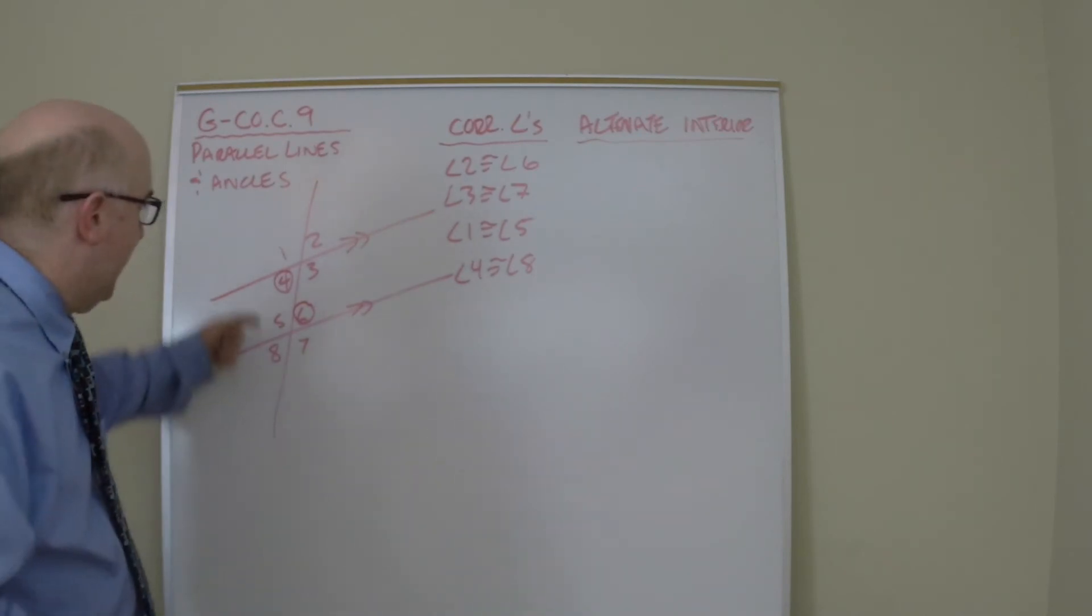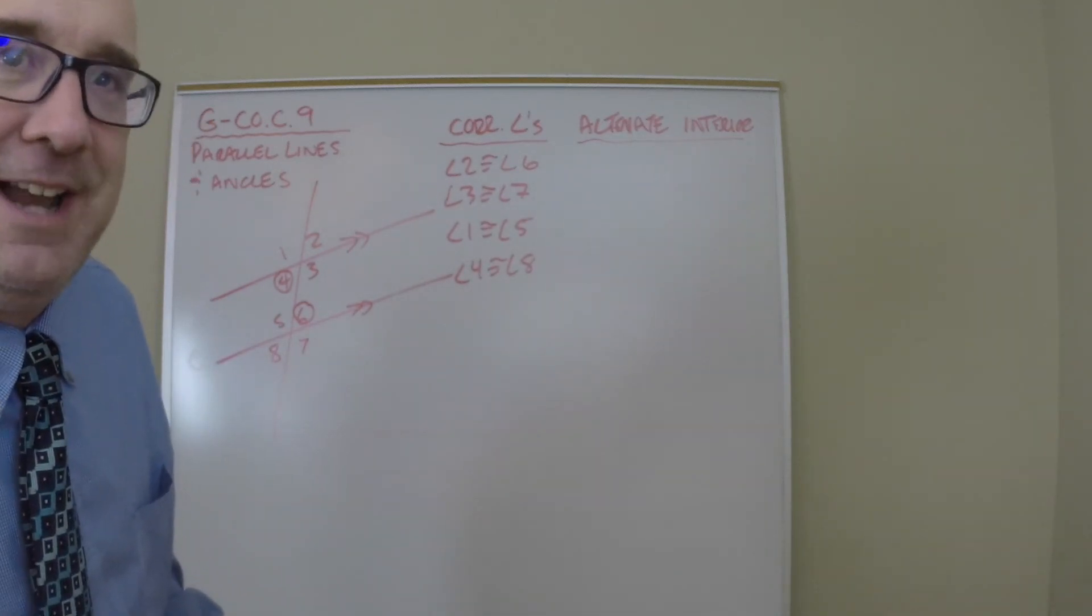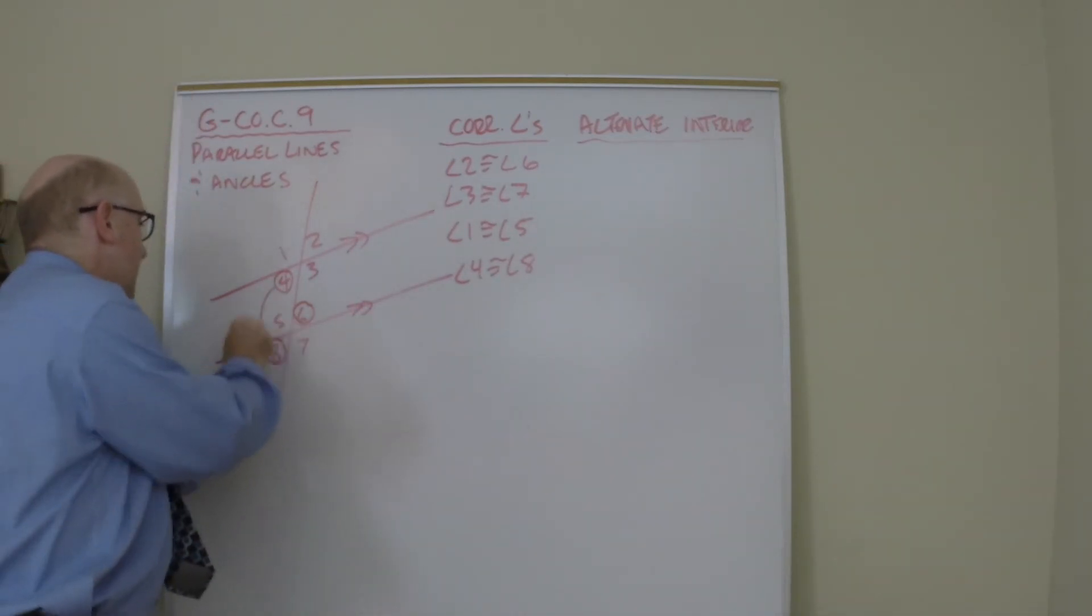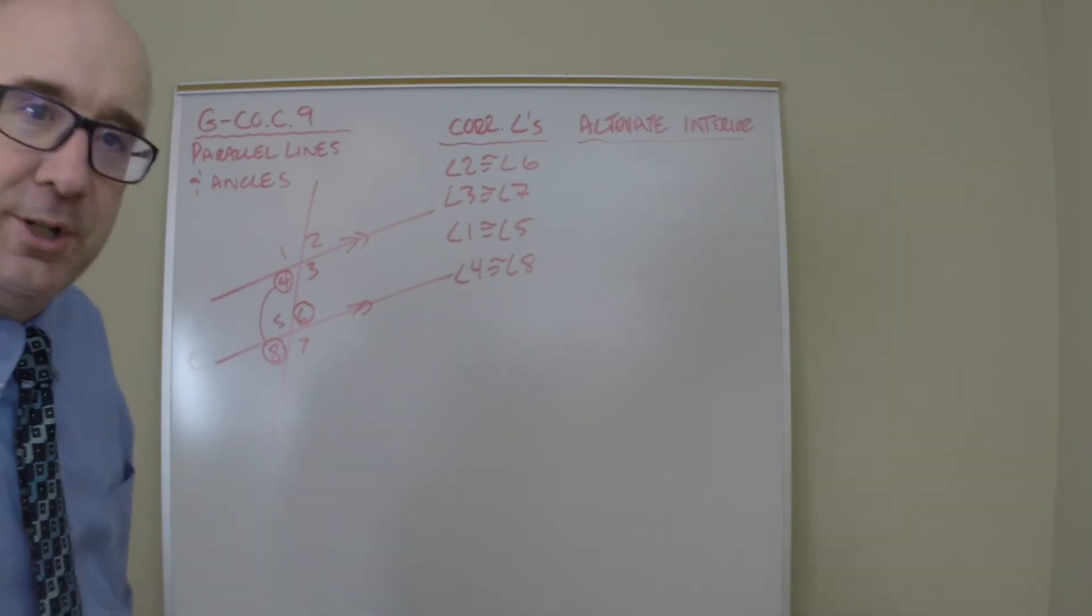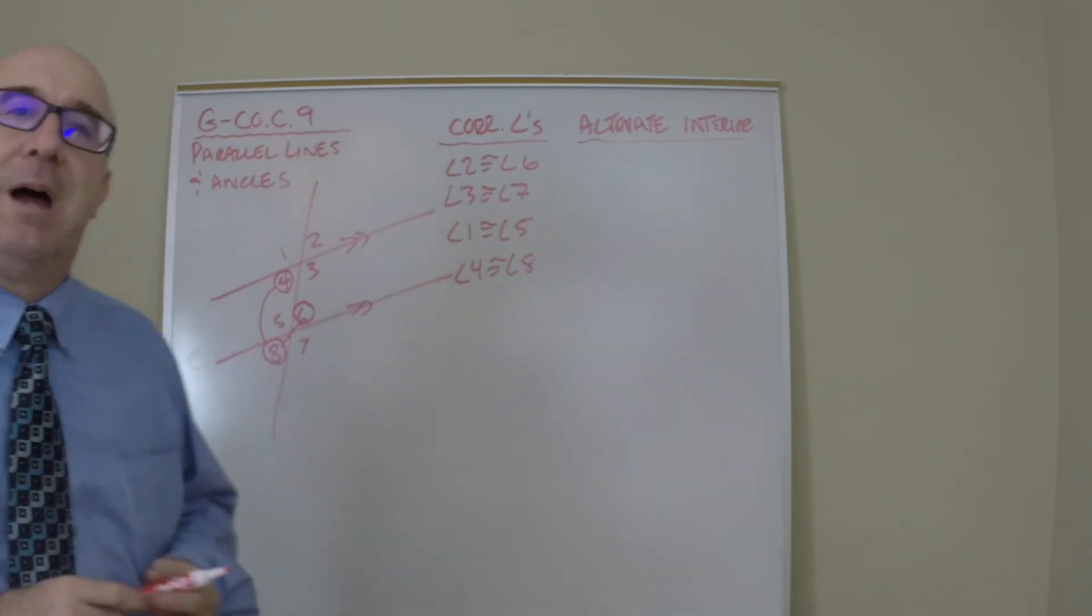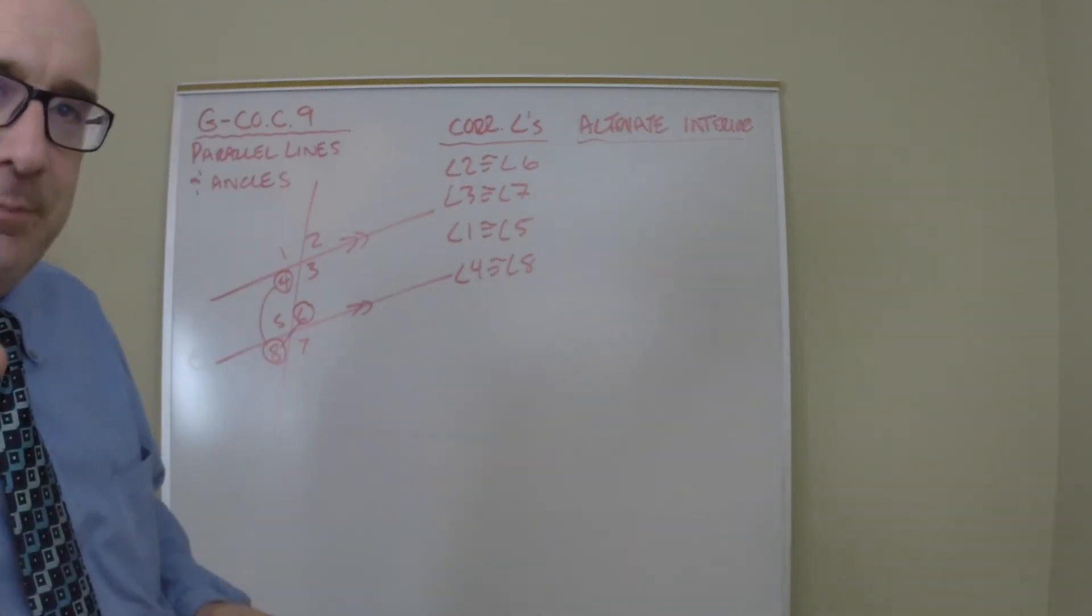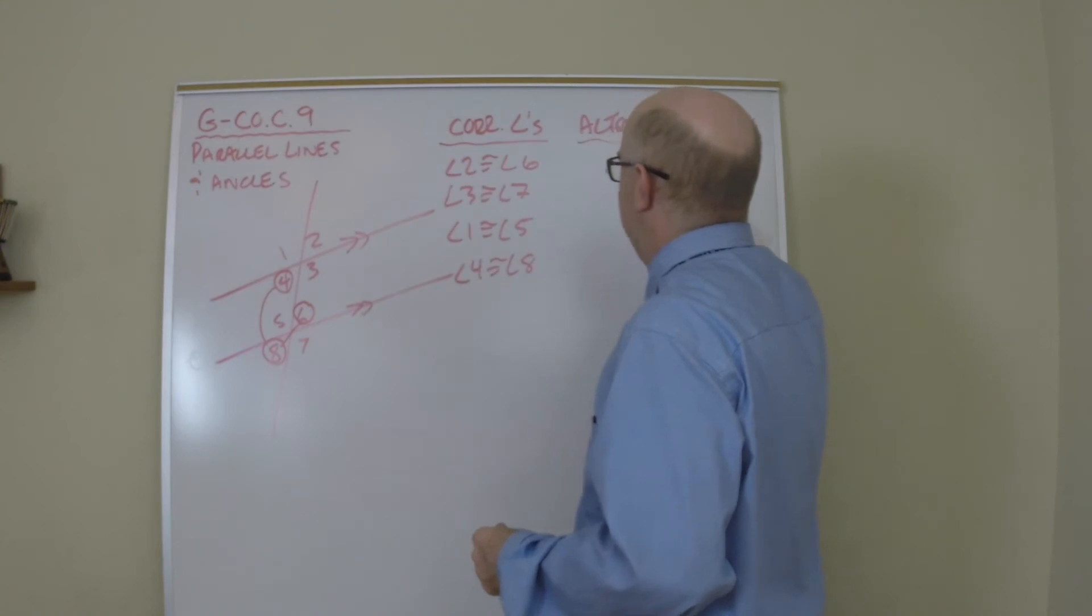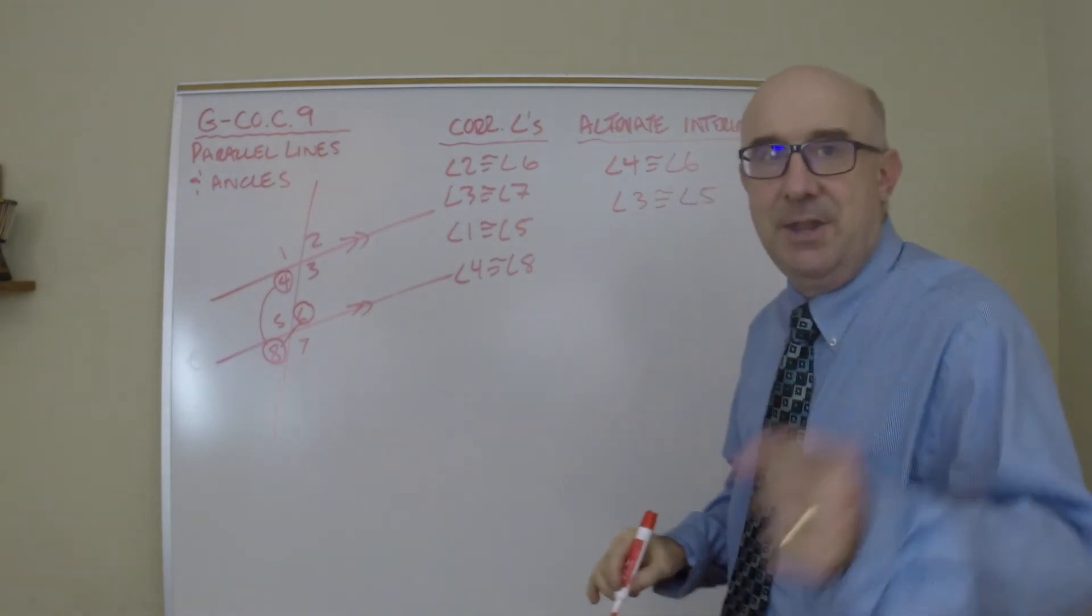Let's prove that angle 4 is the same as angle 6. If I was writing a proof, I would say angle 4 is congruent to angle 8 because corresponding angles are congruent with parallel lines. I would then say angle 8 is congruent to angle 6 because vertical angles are always congruent. I've connected 4 to 8 and 8 to 6. My final line would say angle 4 is congruent to angle 6 because of the transitive property. That gives us angle 4 and 6 are congruent, and angle 3 and angle 5 are congruent.